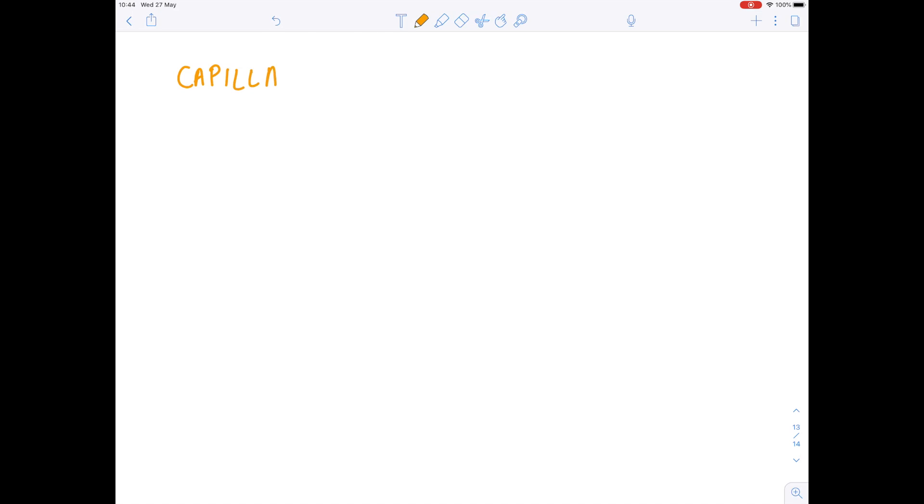The last thing we need to mention to do with the gas exchange and the alveoli, we need to look at blood capillaries. And so if you look at this diagram, the grape-like structure is the alveoli and then surrounding the grape-like structure is this network of blood capillaries.